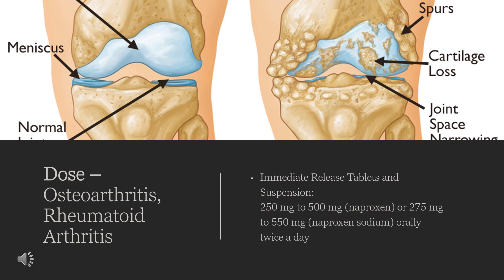Delayed release dosing is 375 mg to 500 mg orally twice a day, with the option to increase to 1500 mg orally once a day for a limited time up to six months in patients requiring higher anti-inflammatory or analgesic activity. Symptomatic improvement of arthritis is usually observed within one week; however, treatment for two weeks may be required to achieve full therapeutic benefit.